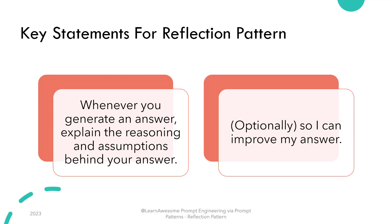The key contextual statements for this pattern are: 'Whenever you generate an answer, explain the reasoning and assumptions behind your answer' — and optionally — 'so I can improve my answer.' This not only instructs the large language model to explain the reasoning and assumptions, it also tells the model that the intention is to improve the question, helping the model tune its answers to a specific purpose.